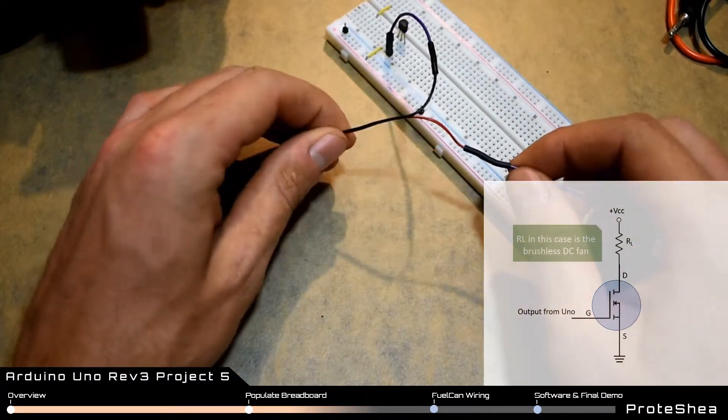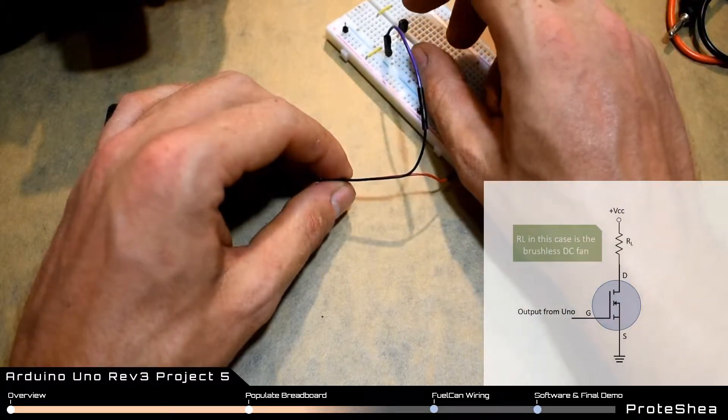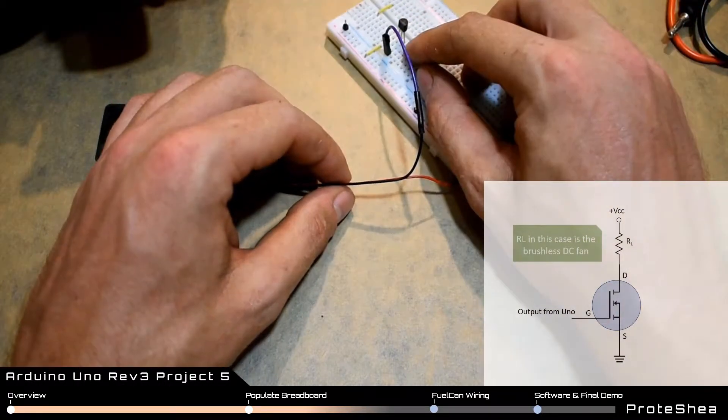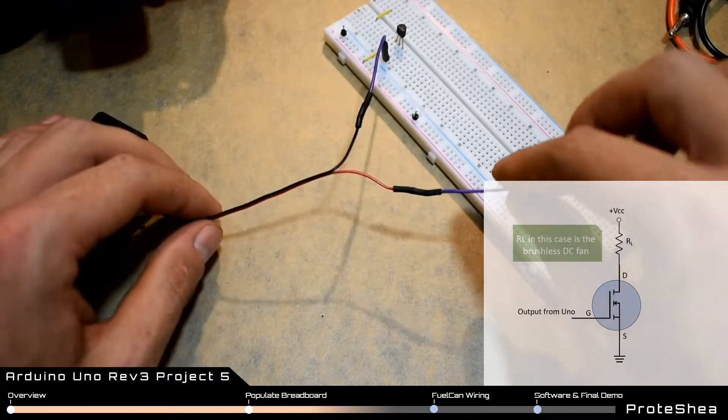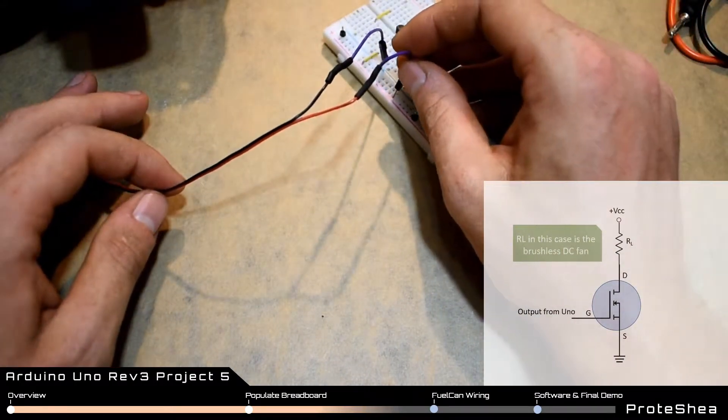In this case, the DC fan has a black wire and a red wire. Connect the black wire to the drain pin of the n-channel MOSFET and then connect the red wire to the positive voltage rail.